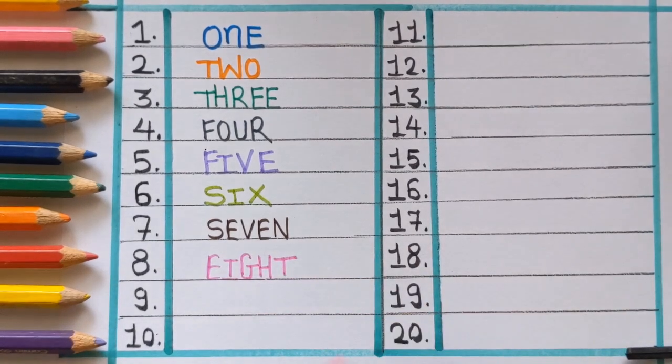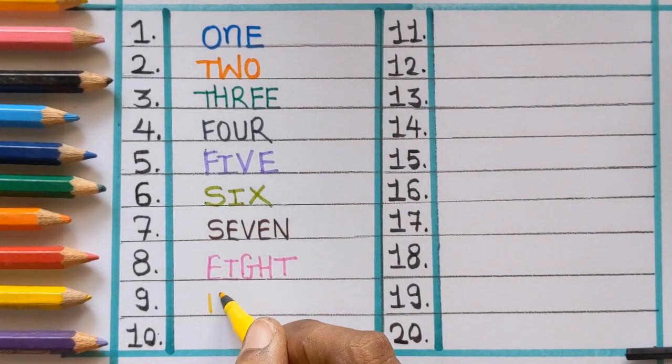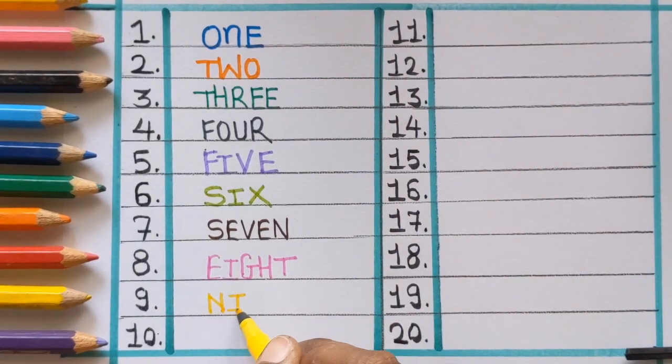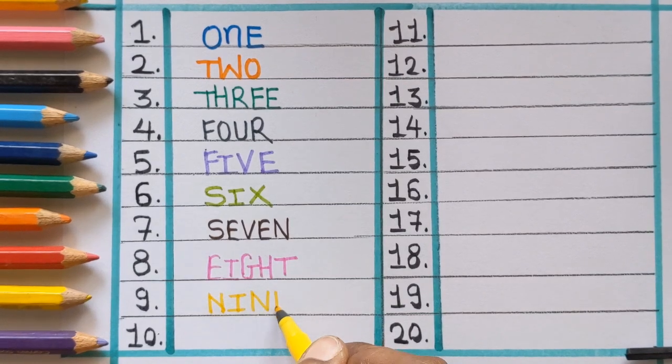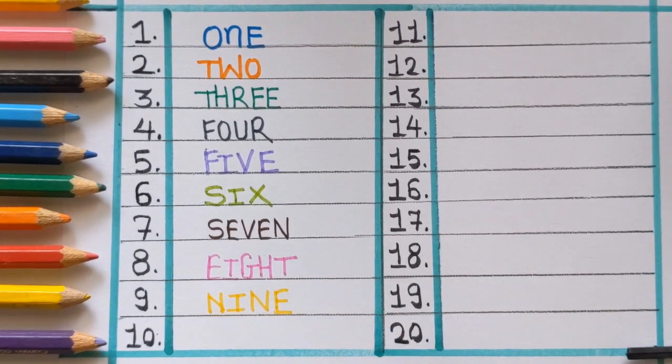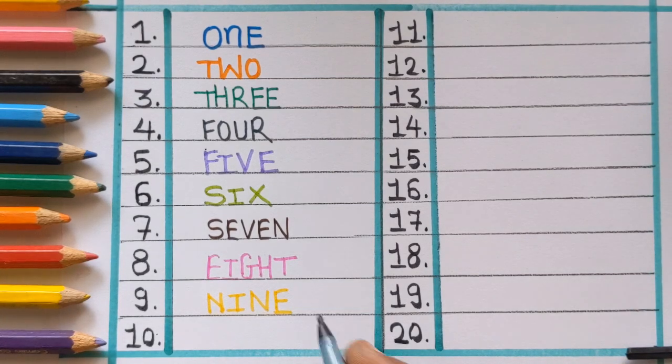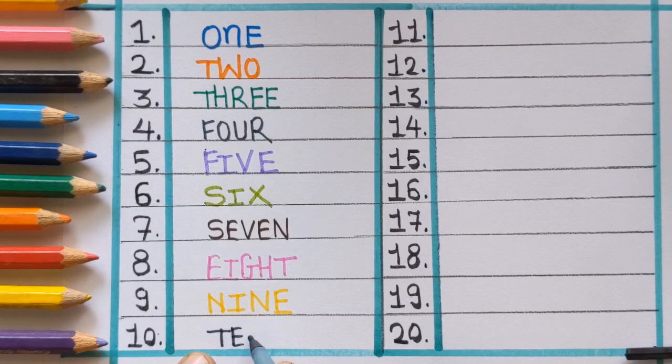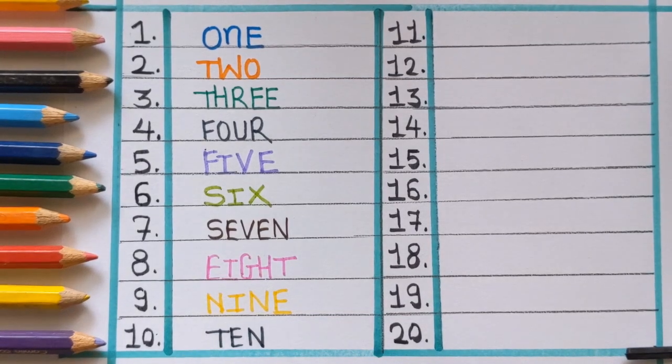Number eight, E-I-G-H-T, eight. Next number is nine, N-I-N-E, nine. Number ten, T-E-N, ten.